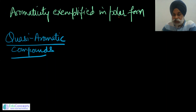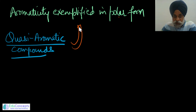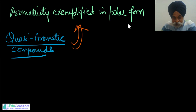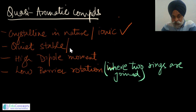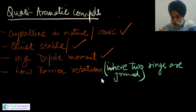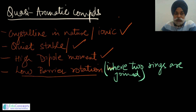These are two ways to identify whether a compound is quasi-aromatic: aromaticity is explained in the polar form. As a virtue of this, quasi-aromatic compounds are generally zwitterionic or ionic, and since they are ionic they are quite stable. Due to polarity generation, they tend to acquire a high dipole moment, and when in fused rings they generally have a low barrier of rotation.